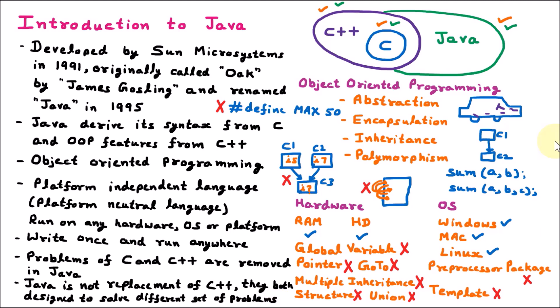Java is popular in the market because of its feature of platform independence. Java is independent from hardware — it can run on any RAM, any hard disk — and it can work on any operating system like Windows, Mac, Linux, Solaris, Ubuntu, everywhere. So if you are designing code in Java, it can run anywhere. Because of that, Java is very popular. That is all about Java.